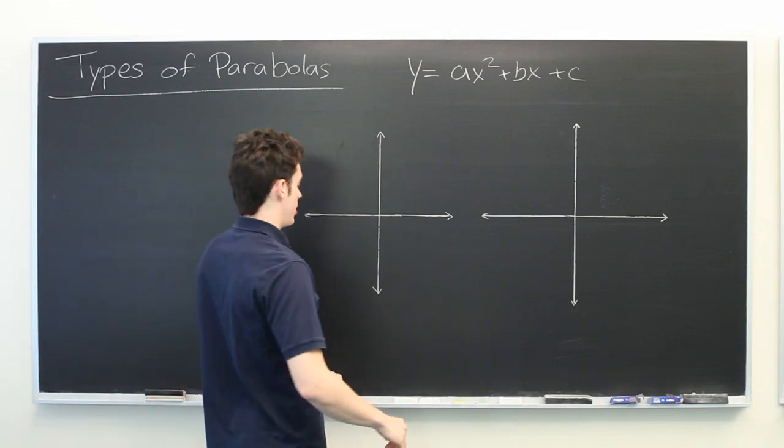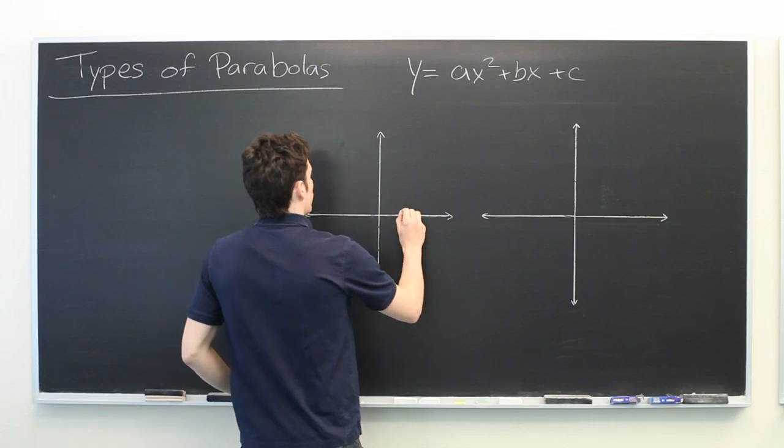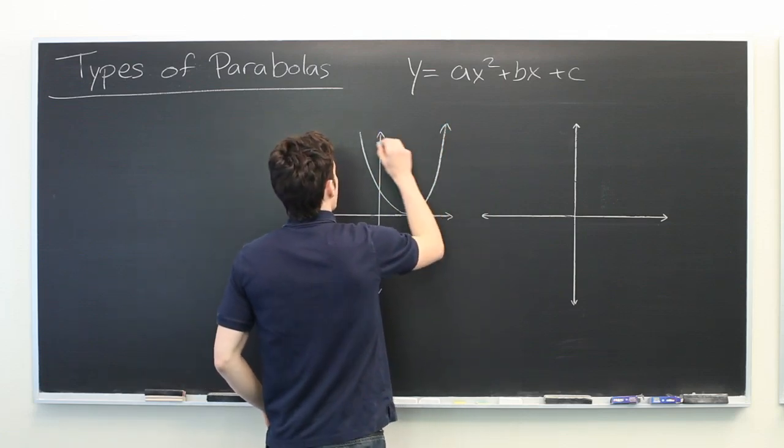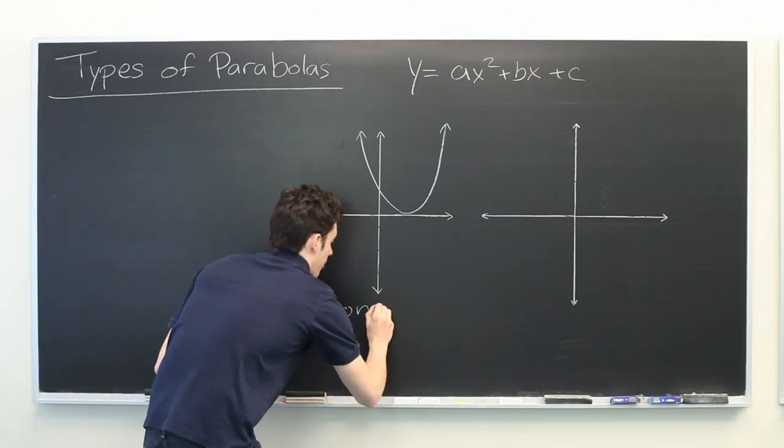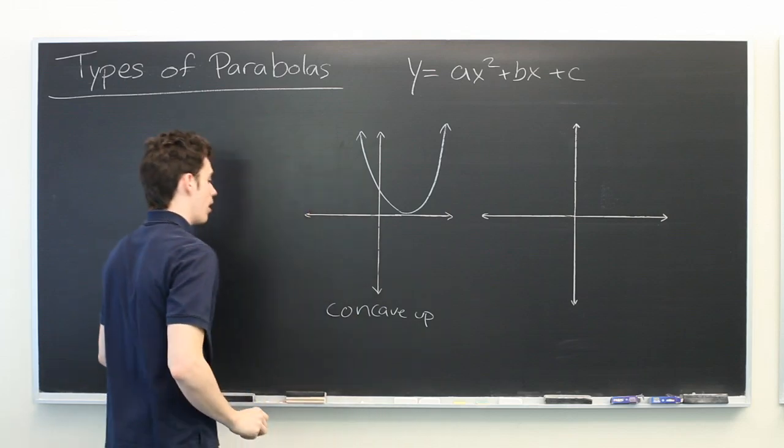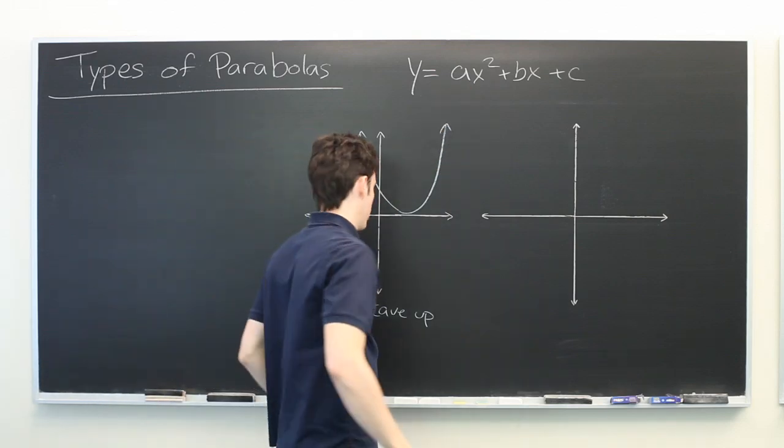So let's talk about some different types of parabolas. Here we have a parabola that opens upward, or said to be concave up. This happens when the leading coefficient, in our case a, is greater than zero.